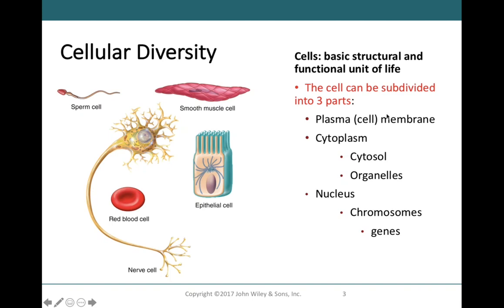Most cells in our bodies will have all three characteristics: plasma membrane, cytoplasm, and nucleus. Smooth muscle cells are structurally and functionally very different from other cell types, but all cells have a plasma membrane. One note: red blood cells do not actually have a nucleus, but most cells in the body will have all three principal parts.